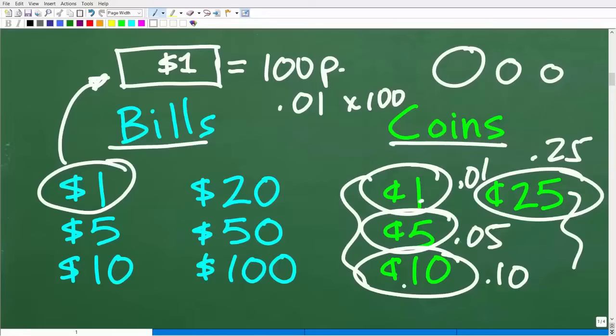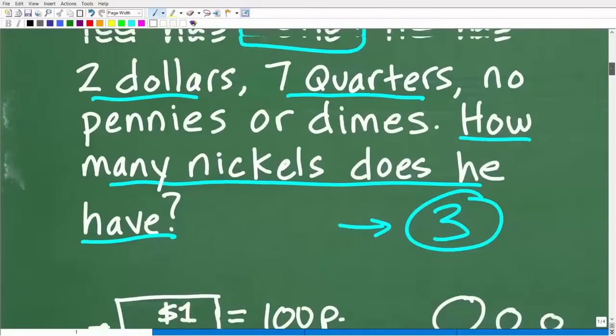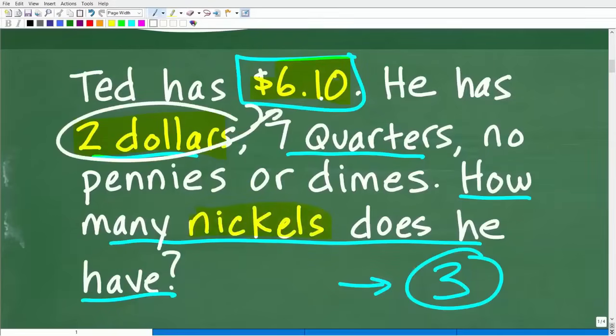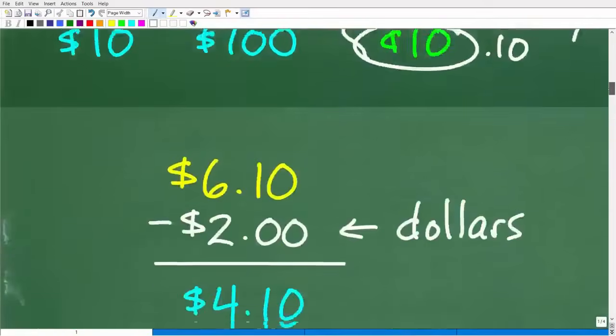Okay, so now that we have a quick sense of the value of bills and coins, we can take a look at this problem and say, if Ted has $6.10 and he has $2, we can just remove those dollars from this amount, because what we're looking for is nickels. So let's subtract away the bills from $6.10. Once we've done that, then we can easily take away the value of those quarters. And then whatever's left has to be the total value of the nickels, and then we kind of figured out from there.